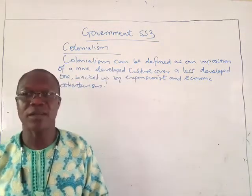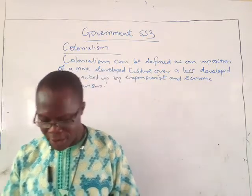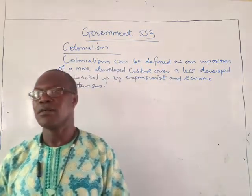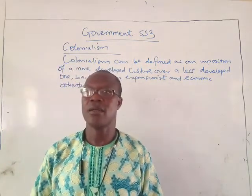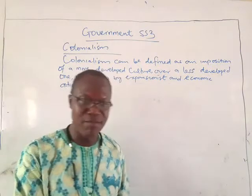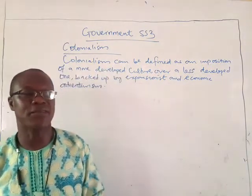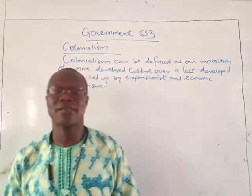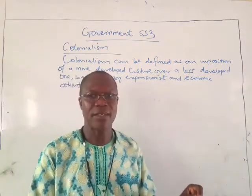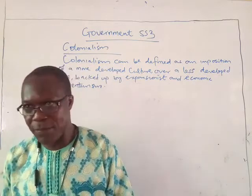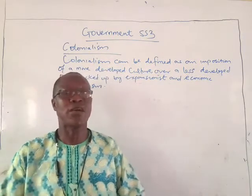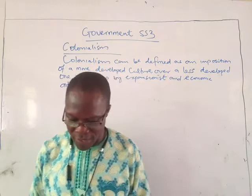To provide adequate security for the trade routes and traders as well was another major reason. Number four: to put an end to slave trade. During the colonial era, there was slave trade in which colonial traders came to West Africa to buy slaves. But when legitimate trade started, there was a need to put an end to slave trade so that trade in farm produce could take place. To make the abolition effective was the reason why they came to West Africa.